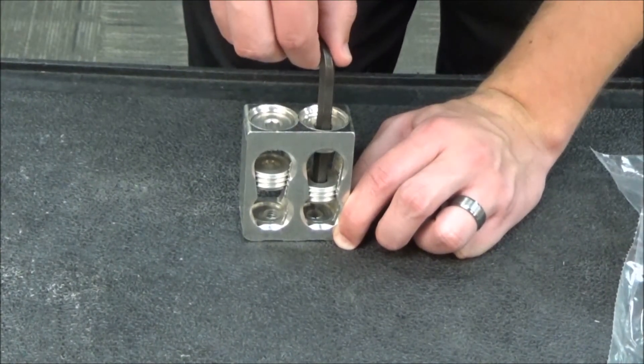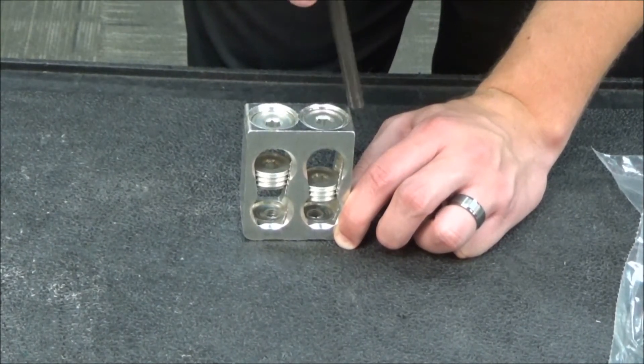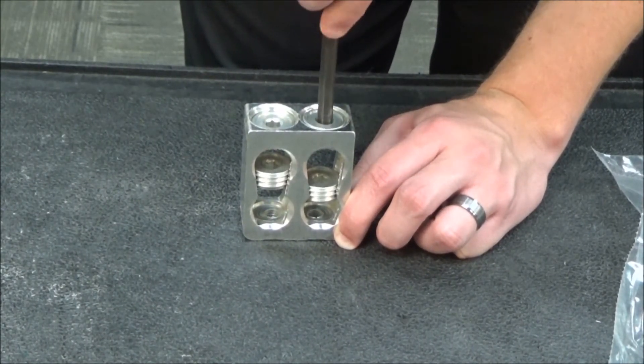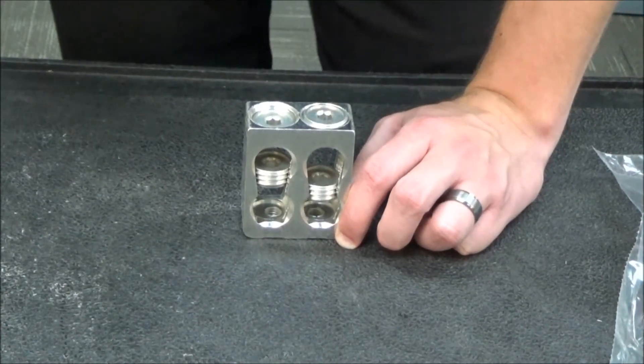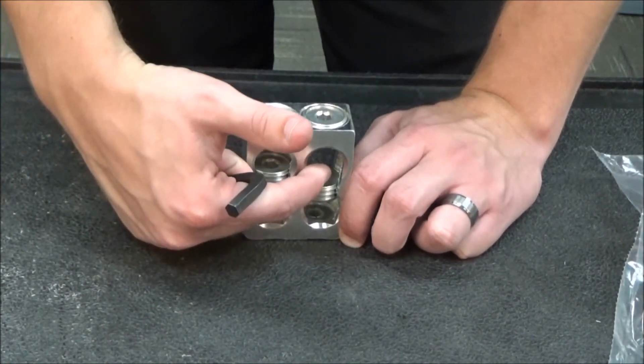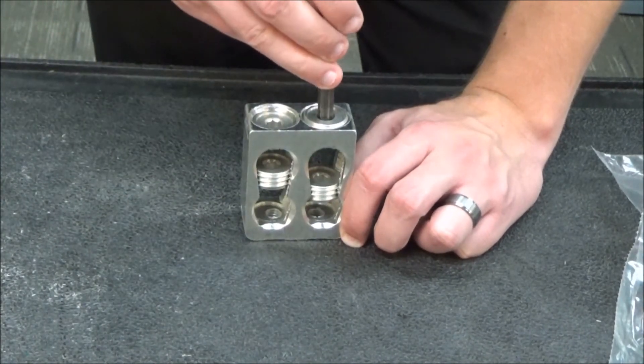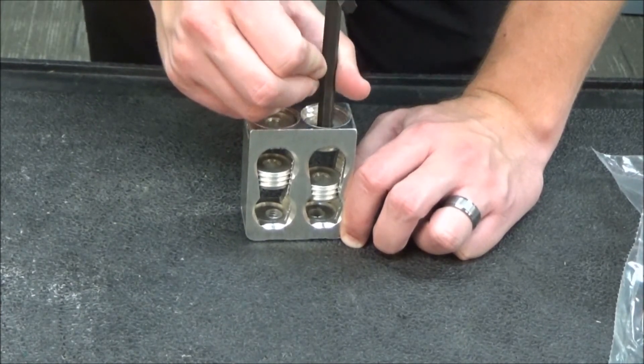Once you have it tightened to the appropriate torque, you would then loosen the top wire binding screw again, bring your top wire in, put it on top of the bottom wire binding screw, and then tighten the top wire binding screw to the appropriate torque again.